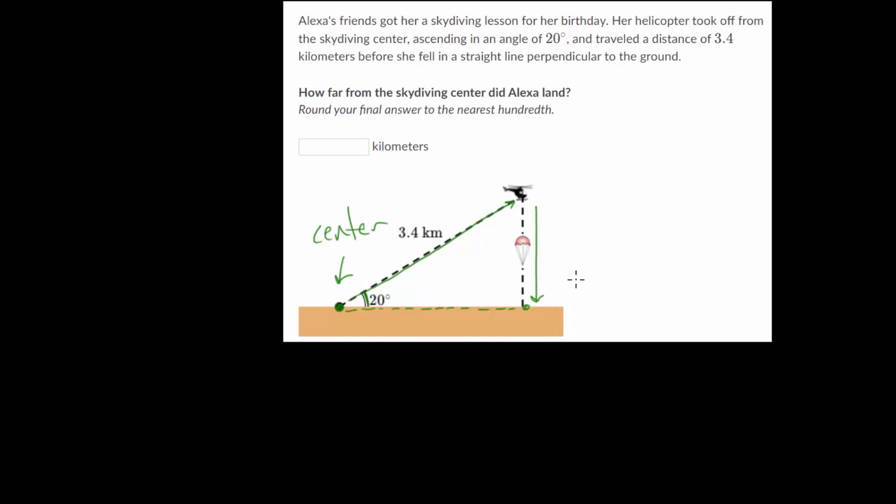and this is where she landed. So we need to know that distance. They're not asking how far she was in the air for, or how many kilometers she fell. We're asking how far she landed from the center. So let's give that a variable. We can call that x, or whatever you like.